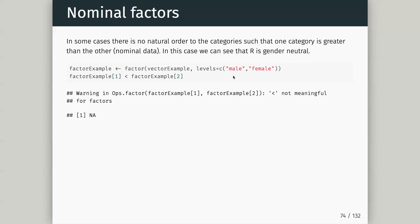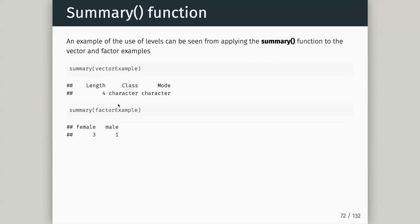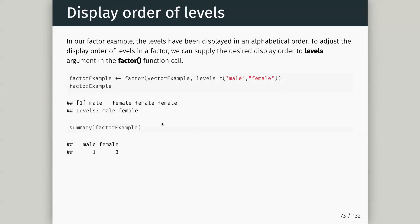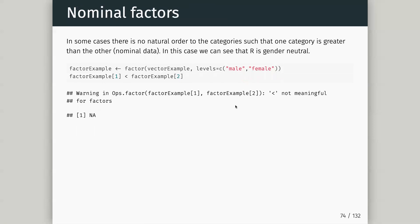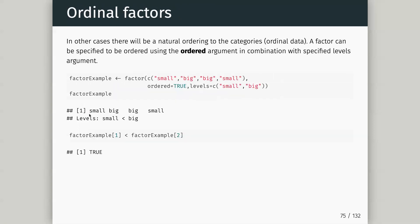In some cases there is no natural order — we wouldn't say one is greater than the other. With a non-ordinal factor, if I try to say is the first element in my factor, which was male, less than female, R says that makes no sense. It's going to give me NA — not available — because we're comparing two things which don't have an implicit order.